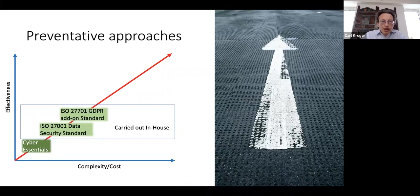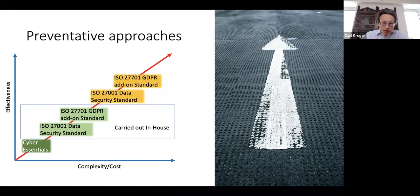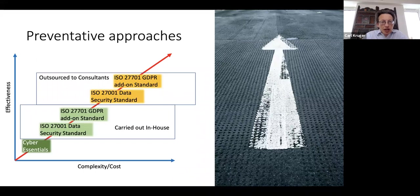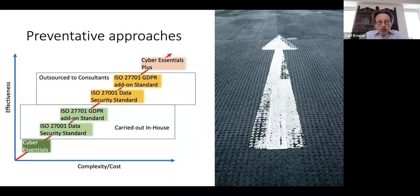You can get ISO 27701 as an add-on to 27001. If you get these put in place by your own in-house team, that's going to be much cheaper and also more effective, because the knowledge of how the system works will be far closer to what's really happening — and consequently more accurate and reliable. There's a middle ground where you have it installed and maintained in-house but use consultants to advise and improve from time to time. There's also Cyber Essentials Plus, which we'll talk about.